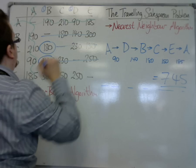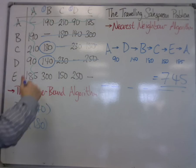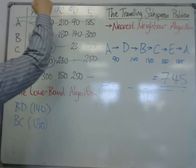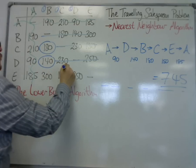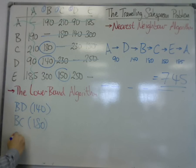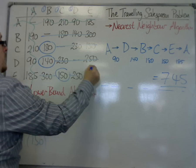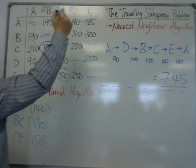Delete the rest of row C, that connects me to C. So I'm now looking down B, C and D. The shortest one is CE. It's CE at 150. That connects me to CE.